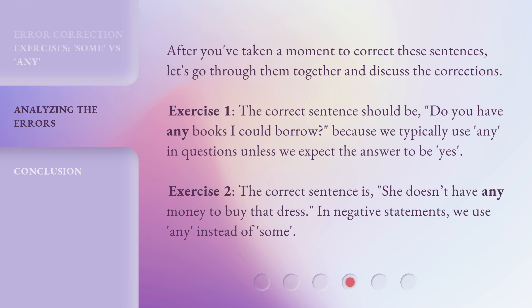Exercise 2. The correct sentence is, she doesn't have any money to buy that dress. In negative statements, we use any instead of some.